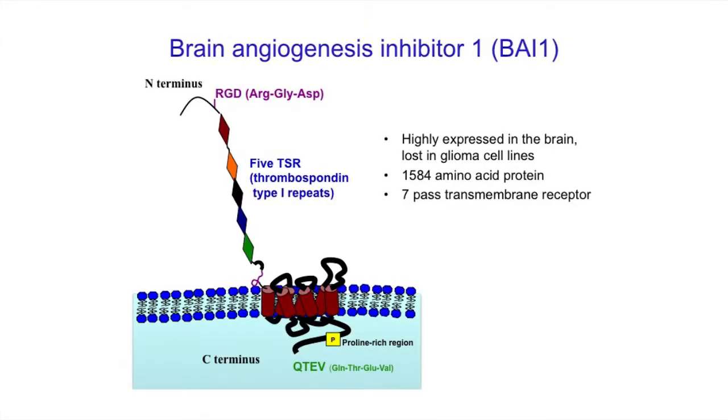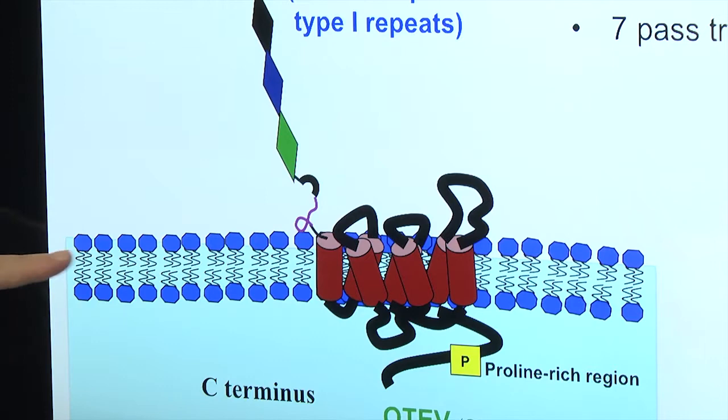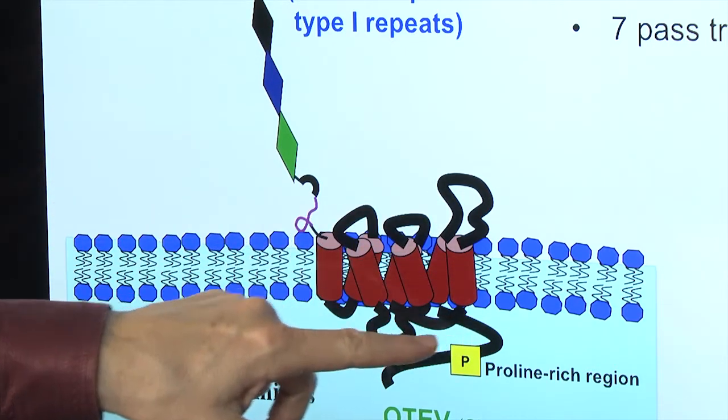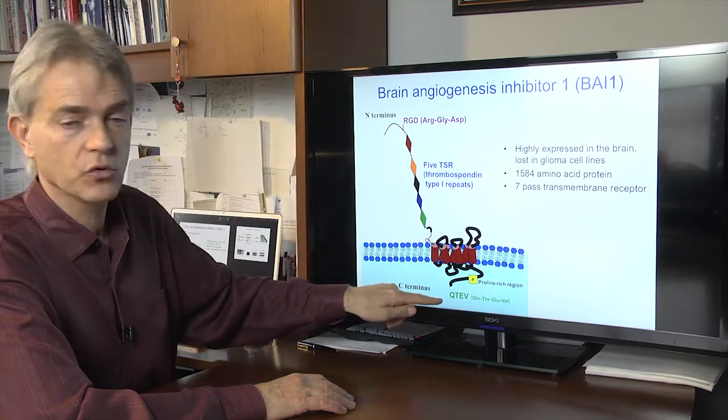So here is our protein of interest. It's called brain angiogenesis inhibitor 1, BAI1 for short, and you can see it's embedded in the cell membrane with seven transmembrane domains, a large piece that's extracellular and a piece that goes inside.